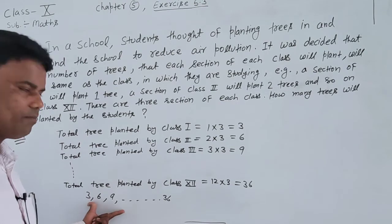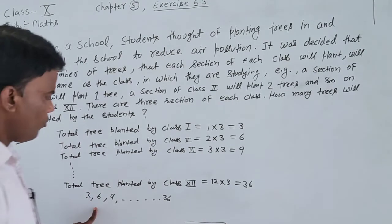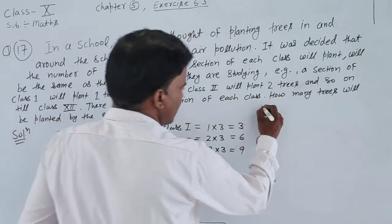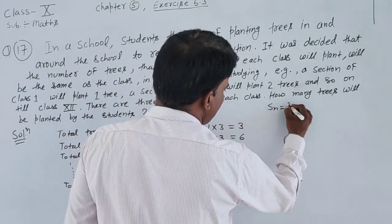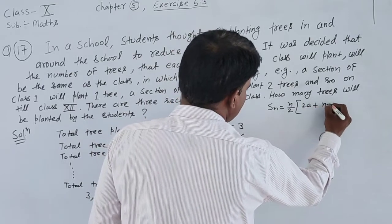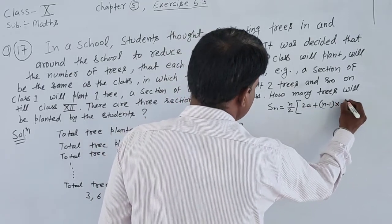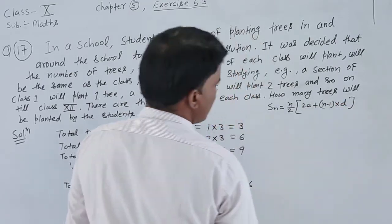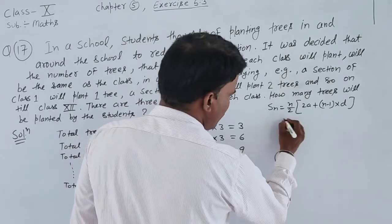We need to find the total sum. The formula is S_n equals n by 2 times [2a plus (n minus 1)d]. We will use this formula.